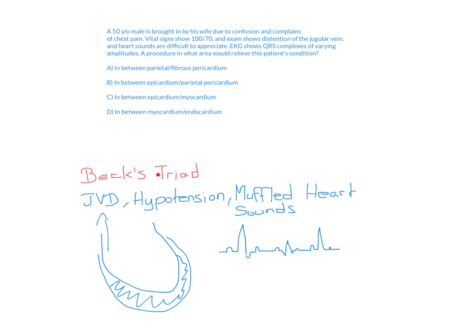The second part of Beck's triad is hypotension. We saw that here with a blood pressure of 100 over 70. Because the fluid is pushing and exerting a lot of pressure on the left ventricle, we can't get enough blood out. That results in less blood going to the periphery, which causes hypotension.